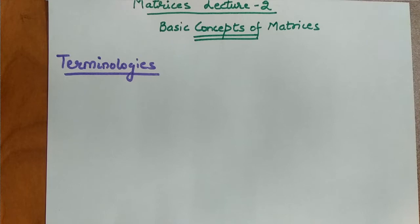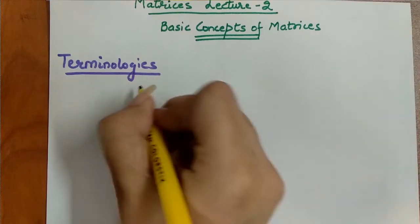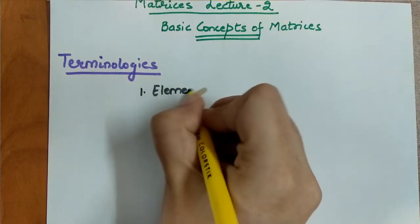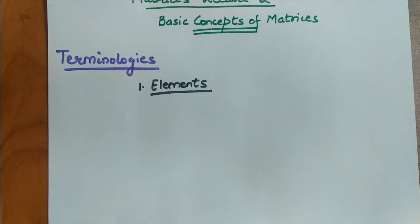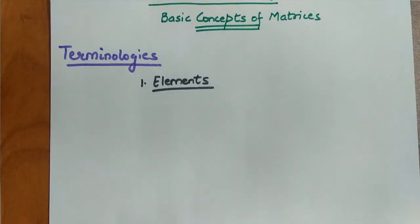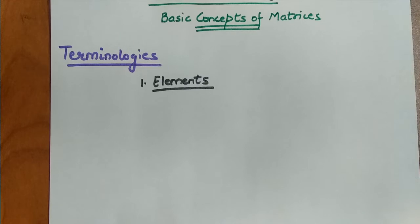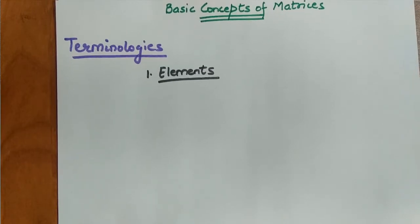The first terminology we will cover in the matrices chapter is elements. I hope you remember that in the first video we had an example where we were representing why matrices are important. We had an example of a journal of students in a class, representing which student has how many pens and pencils. We will use that same example again to explain elements — what they are and how they are used in matrices.